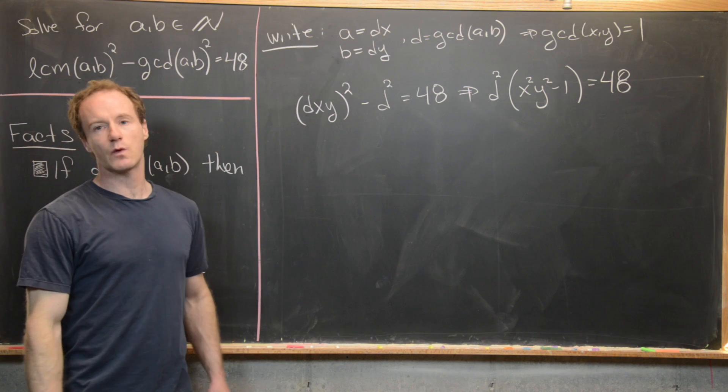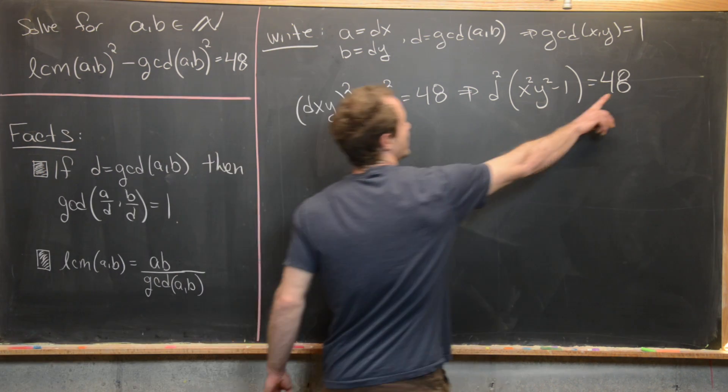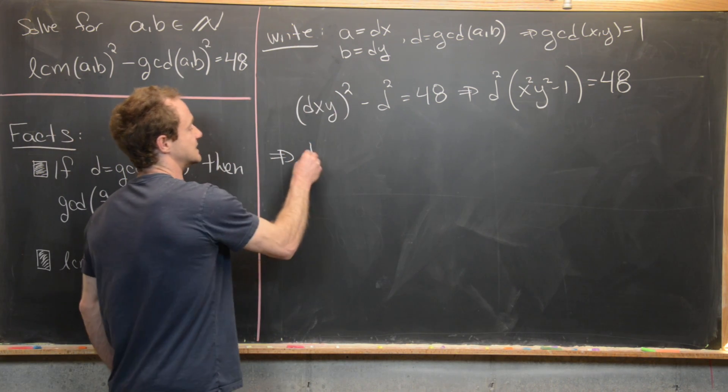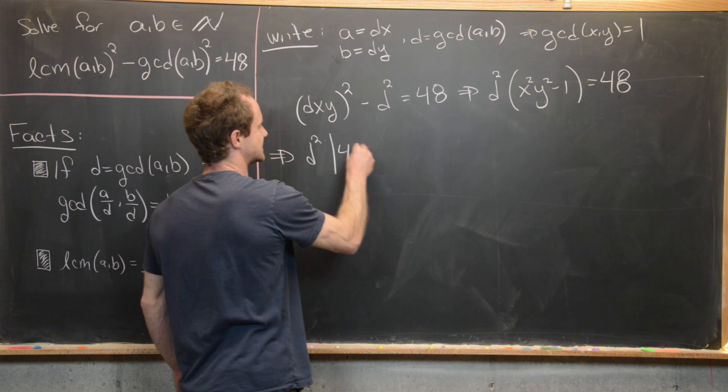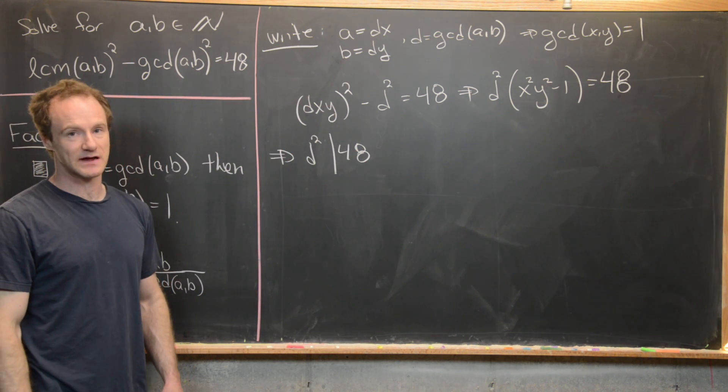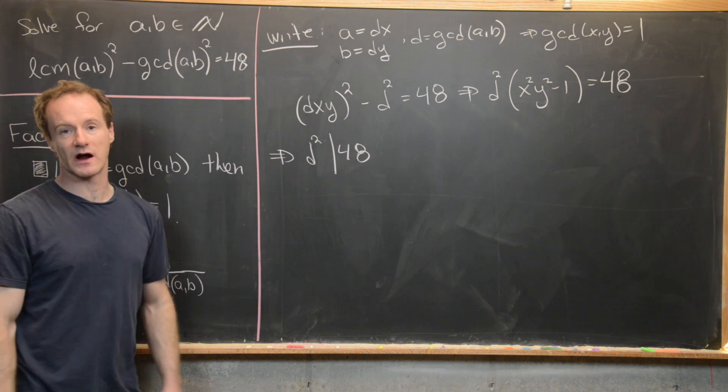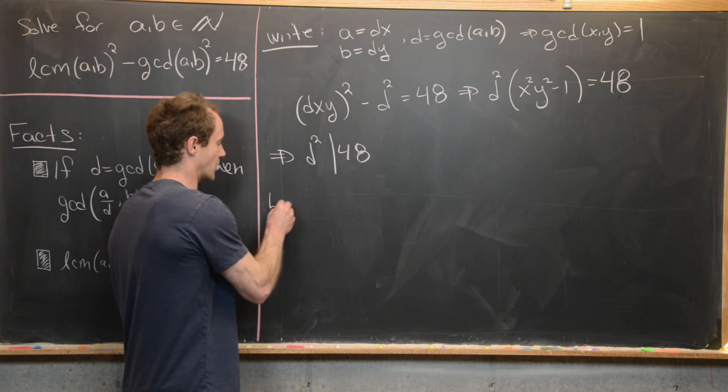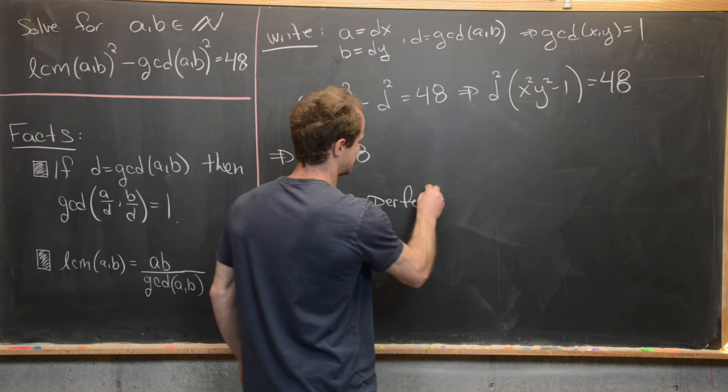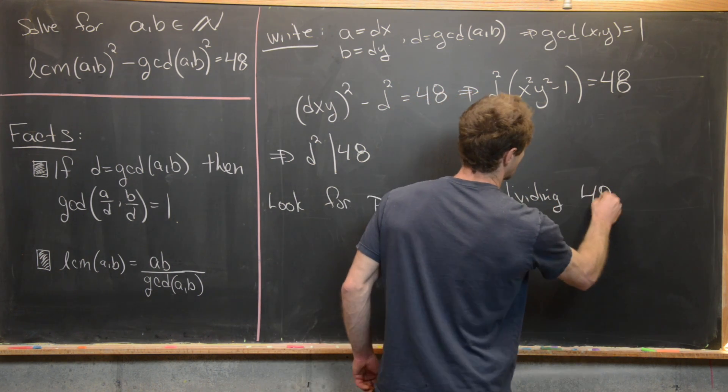But now this is an equation only with natural numbers. And so what that tells us is that 48 is a factor of D squared. In other words, D squared divides 48. But that really restricts the numbers that D can be because D squared must be a perfect square that divides 48. So that's what we want to look for. Look for perfect squares dividing 48.